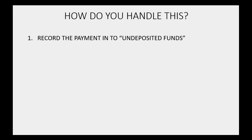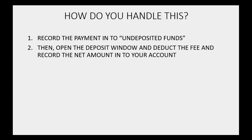You would record the payment the same way we learned in the prior video, except this time you would not choose bank account — you would instead choose Undeposited Funds. Then immediately after recording the payment, you would open the deposit window and deduct the fee and record the net amount into your account.